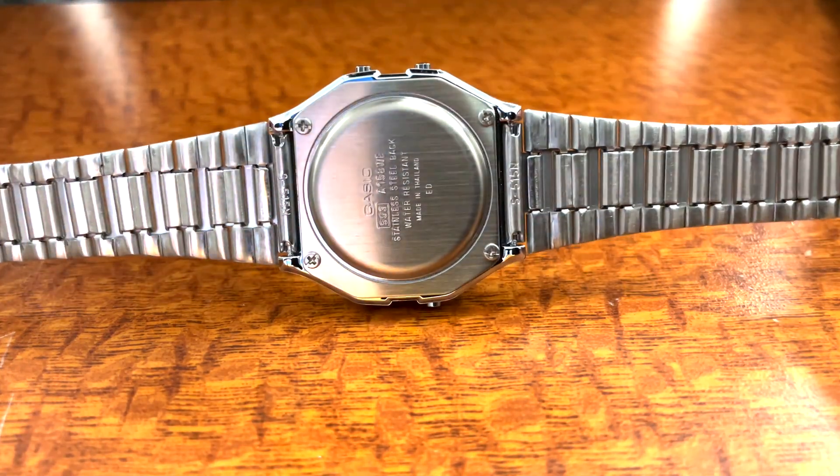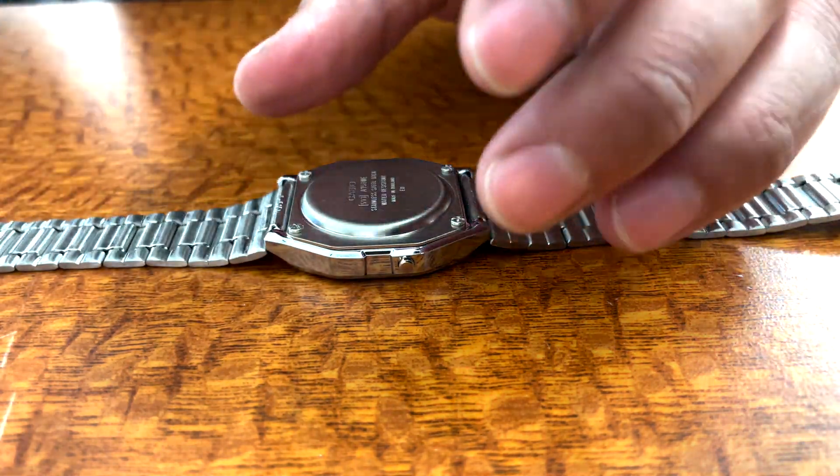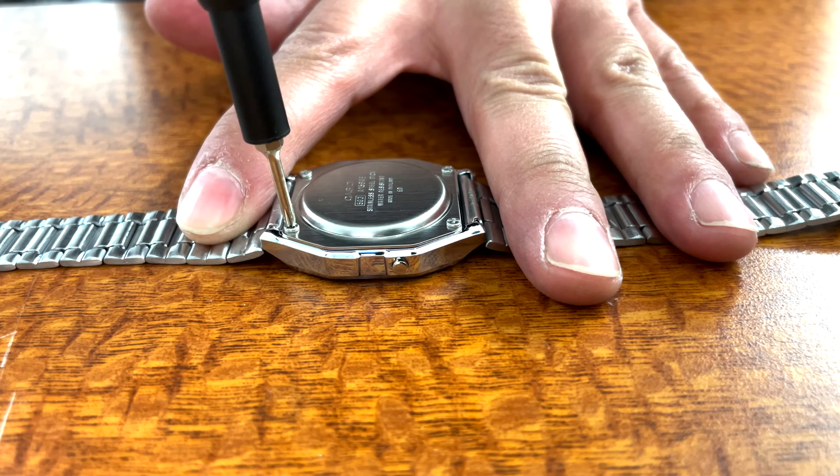First, I'm going to undo the watch strap so that I can lay the watch flat on my work area and see the metal back plate. We're going to use our fine-tipped Phillips screwdriver to unscrew each of the four screws holding on the metal back plate.